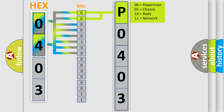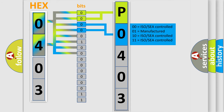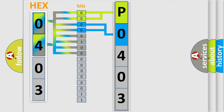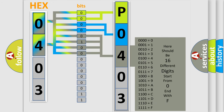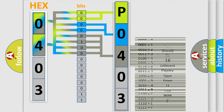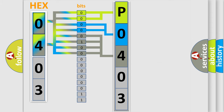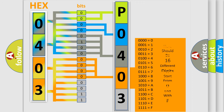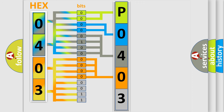The next two bits again determine the second character. The last bits of the first byte define the third character of the code. The second byte is composed of a combination of eight bits. The first four bits determine the fourth character of the code, and the combination of the last four bits defines the fifth character. A single byte conceals 256 possible combinations.